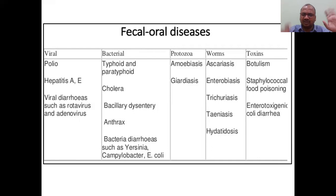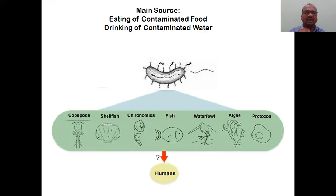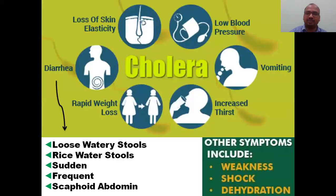The main source is eating contaminated food or drinking contaminated water directly without boiling - raw water from the pond. Kopepods, shellfish - all these from the sea - from water also cholera can come. The cholera bacteria in water can adhere to fish, algae, or protozoa and enter humans. Shellfish especially is very very important and has appeared in questions.